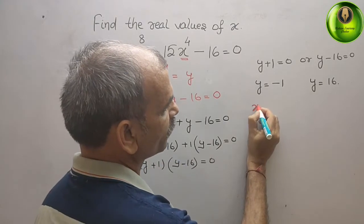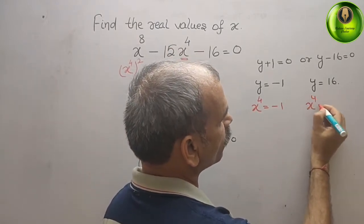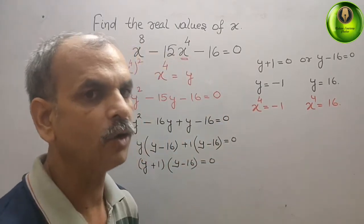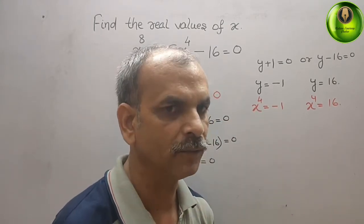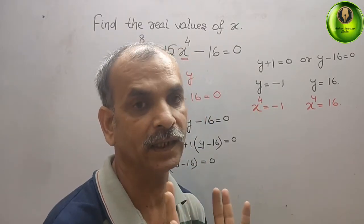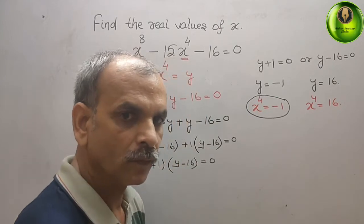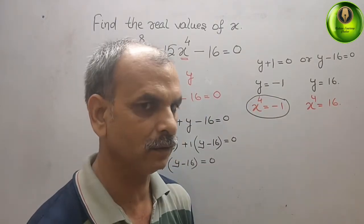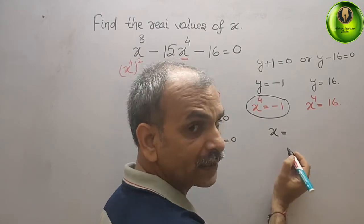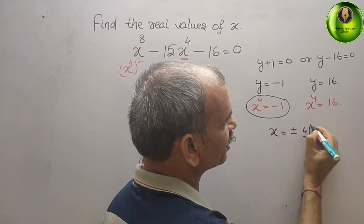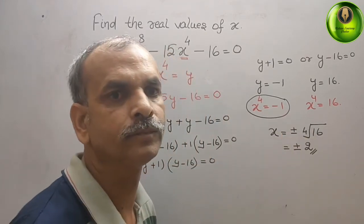Substituting back: x to the power of 4 equals minus 1, or x to the power of 4 equals 16. Now, any real number raised to an even power cannot give a negative result, so we neglect x to the power of 4 equals minus 1. Therefore, x to the power of 4 equals 16, which gives x equals plus or minus the 4th root of 16, that is x equals plus or minus 2.